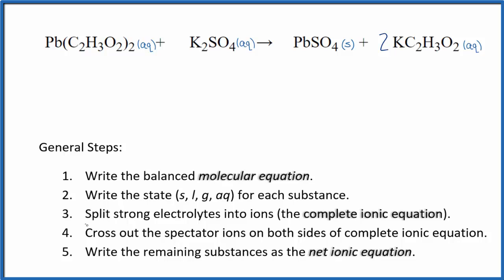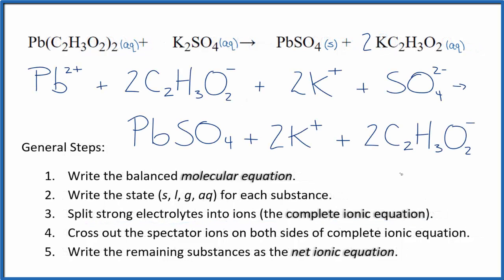Once we have the states, we can split the strong electrolytes into their ions for the complete ionic equation. That looks like this. So this is the complete ionic equation. So we split everything apart into its ions, except this lead(II) sulfate here, because it's a solid. We don't split solids apart in net ionic equations.